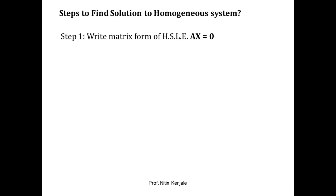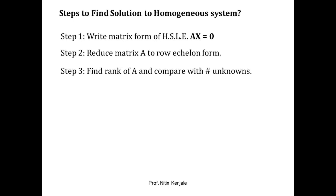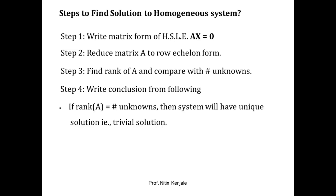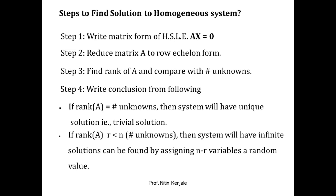To find the solution, first write the matrix form of the homogeneous system: Ax = 0, where A is the coefficient matrix, x is the matrix of unknowns, and 0 is the zero matrix on the RHS. Then reduce matrix A to row echelon form using only row transformations. Calculate the rank of A by counting non-zero rows, and compare it with the number of unknowns. If rank of A equals the number of unknowns, the system has a unique trivial solution. If rank of A is less than the number of unknowns, the system has infinitely many solutions, obtained by assigning n minus r variables a random value.